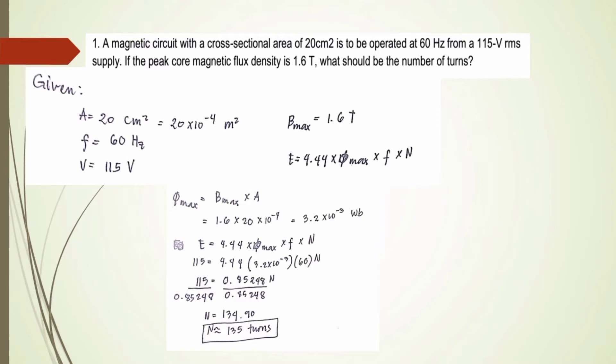If the peak core magnetic flux density is 1.6 Tesla, what should be the number of turns? So we have given here that the cross-sectional area is 20 cm²,